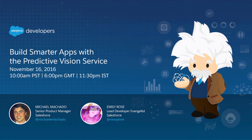Good morning, good afternoon, good evening. Welcome to Building Smarter Apps with the Predictive Vision Service. I'm Chris Chant, and I'll be your host. Today we're joined by Michael Machado, a Senior Product Manager, and Emily Rose, Lead Developer Evangelist, both working here at Salesforce. They'll be speaking about how you can apply deep learning in your applications by training your own image classifiers using the Predictive Vision Service.